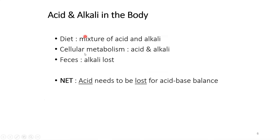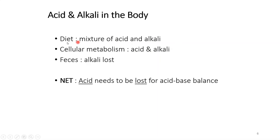Acid and alkali in the body — where does it all come from? Diet is basically a mixture of acid and alkali, so whatever you have in terms of food provides both acid and alkali. Cellular metabolism also yields acid and alkali. Feces is the route through which you excrete most — almost all — of the alkali that is either acquired by the diet or produced in metabolism.